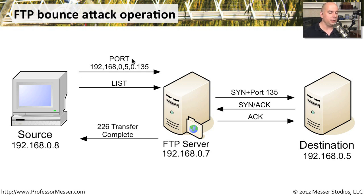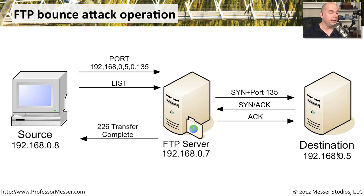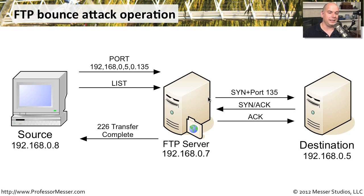You send a PORT command to the FTP server. Normally the PORT command would contain your own IP address, but instead of 192.168.0.8, you specify 192.168.0.5 along with the port numbers for the traffic. Then you send the command to pass through to that device — sending a SYN to port 135, a SYN-ACK, and then it performs a LIST command.